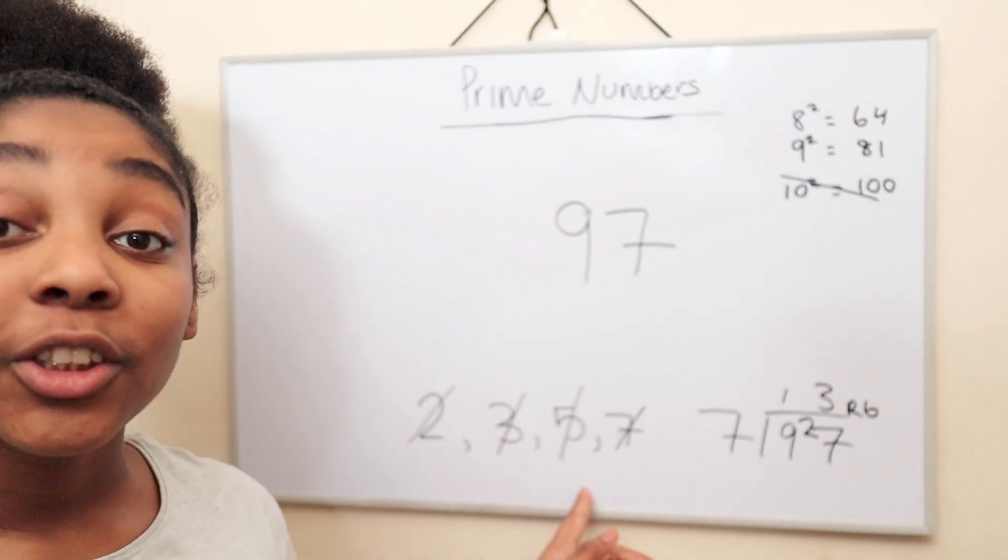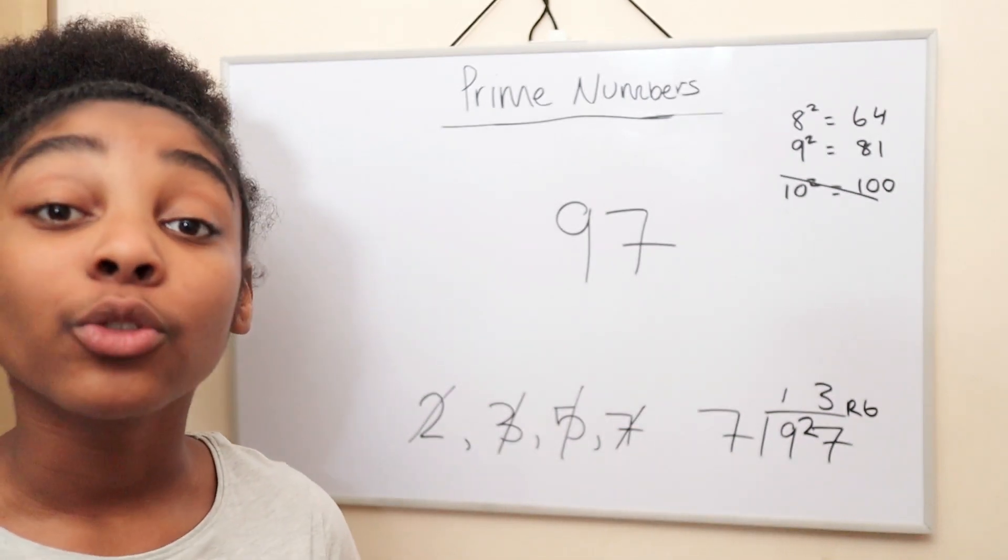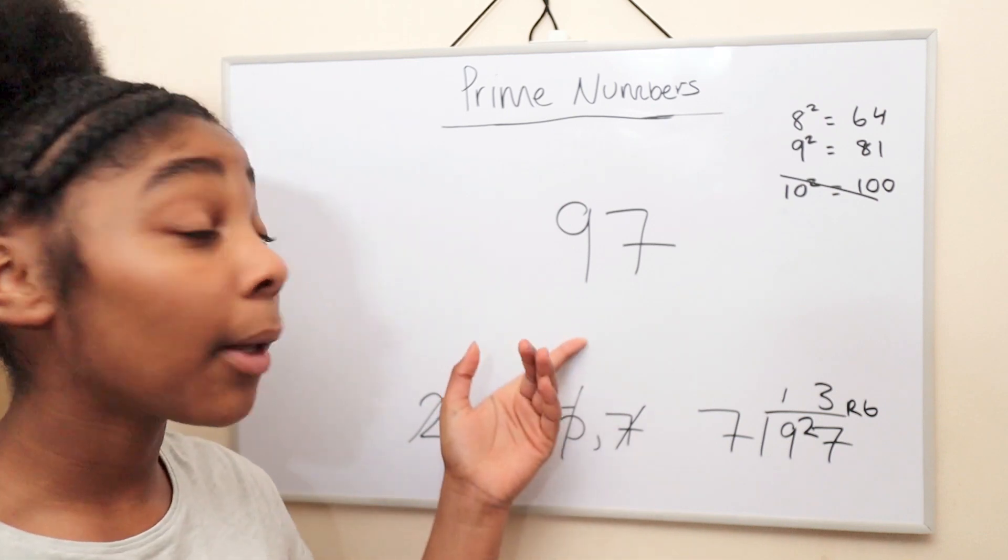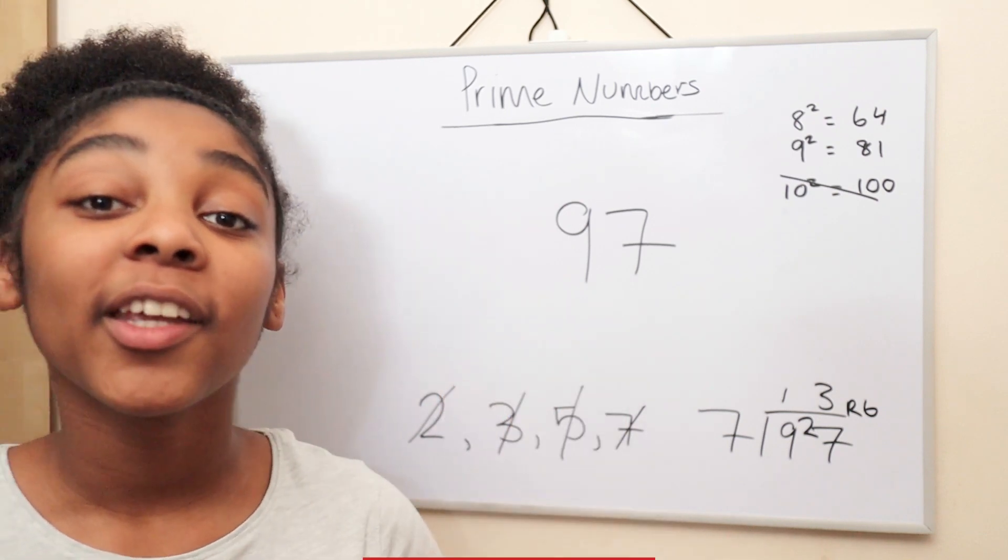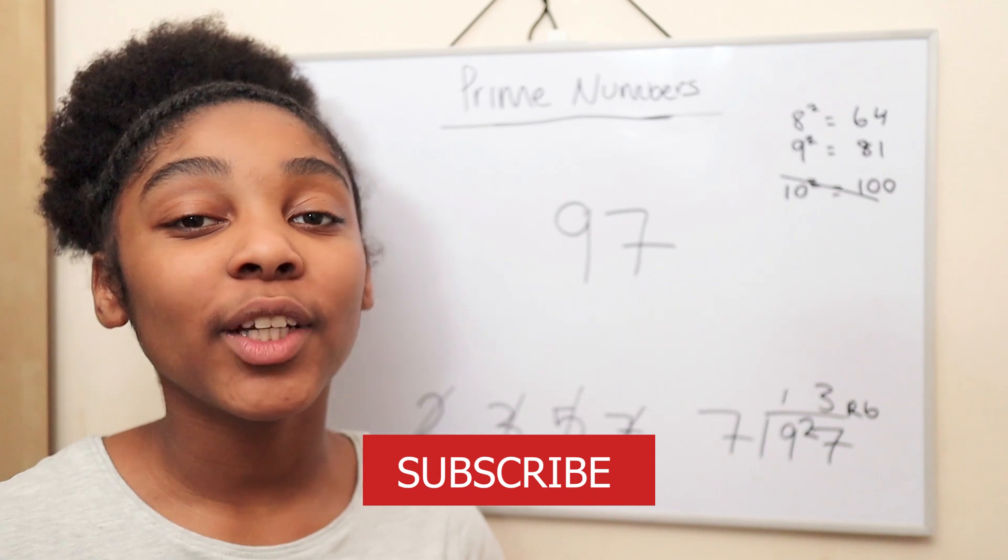Once you're finished and there's no more numbers left and you've crossed out all of them, that means your number is prime. Therefore, 97 is a prime number.